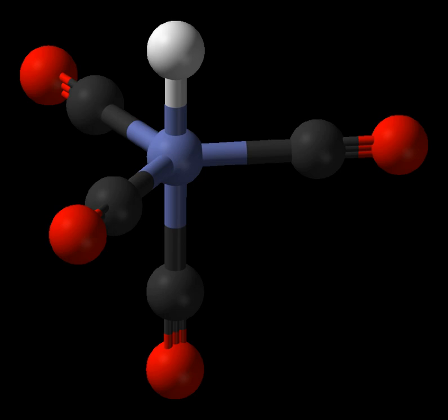In coordination chemistry, a ligand is an ion or molecule that binds to a central metal atom to form a coordination complex. The bonding with the metal generally involves formal donation of one or more of the ligand's electron pairs. The nature of metal-ligand bonding can range from covalent to ionic. Furthermore, the metal-ligand bond order can range from 1 to 3.